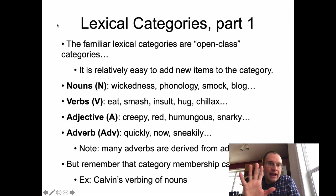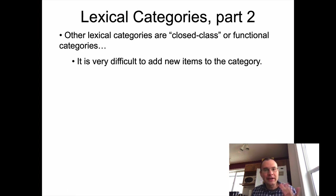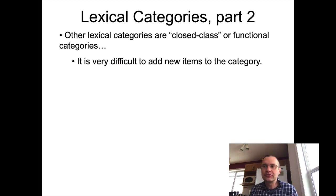These are the open class categories — you can add new ones relatively easily. The counterpart is closed class words or lexical categories, where it's difficult to add new items to the category. We talked about this when looking at adding new pronouns to English — it's not super easy. When people wanted a gender neutral pronoun, they eventually settled on one already existing in the language like 'they.'